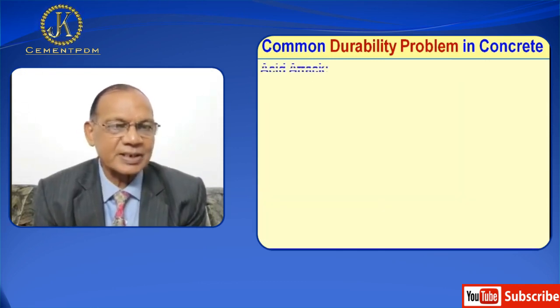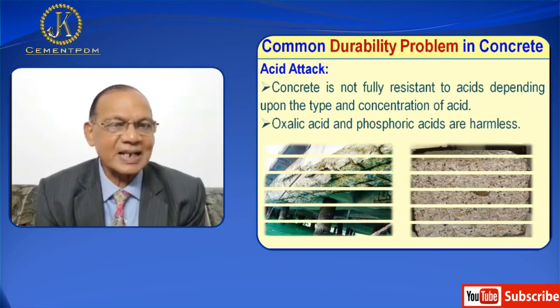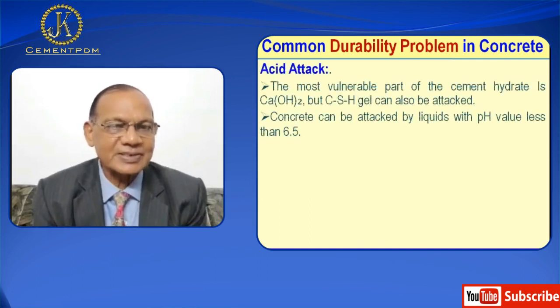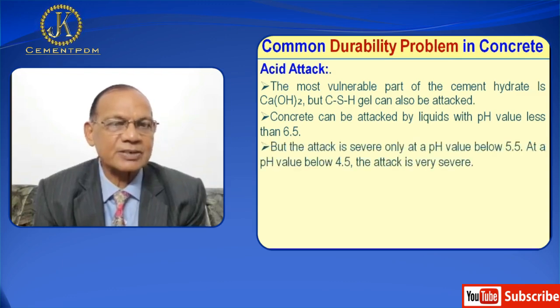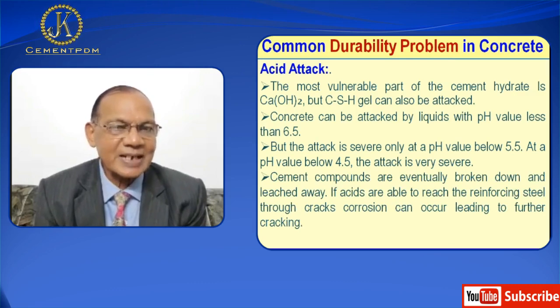Now I will talk about acid attack. Concrete is not fully resistant to acids, depending upon the type and concentration of acid. Oxalic acid and phosphoric acids are harmless. The most vulnerable part of the cement hydrate is calcium hydroxide, but CSH gel can also be attacked. Concrete can be attacked by liquid when pH value is less than 6.5, but the attack is severe only at pH value below 5.5. At a pH value below 4.5, the attack is very severe — the cement compounds are eventually broken down and leached away. If acids are able to reach the reinforcing steel through cracks, corrosion can occur leading to further damage. Thank you.